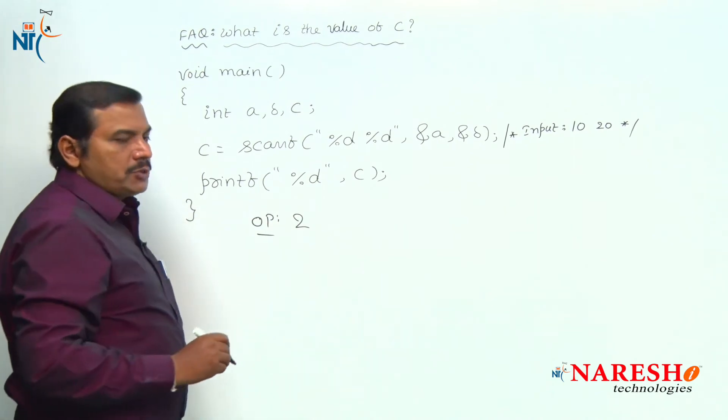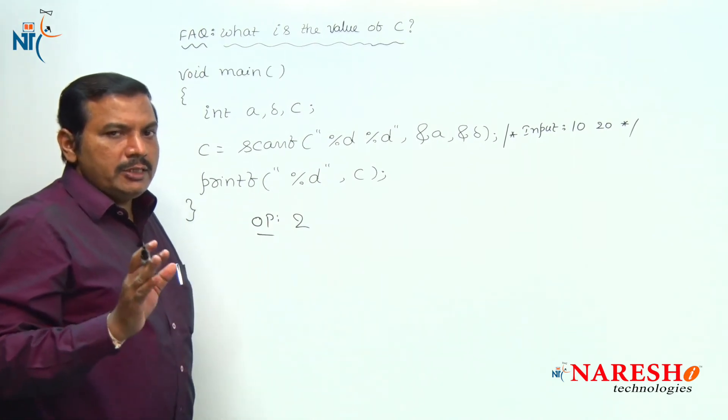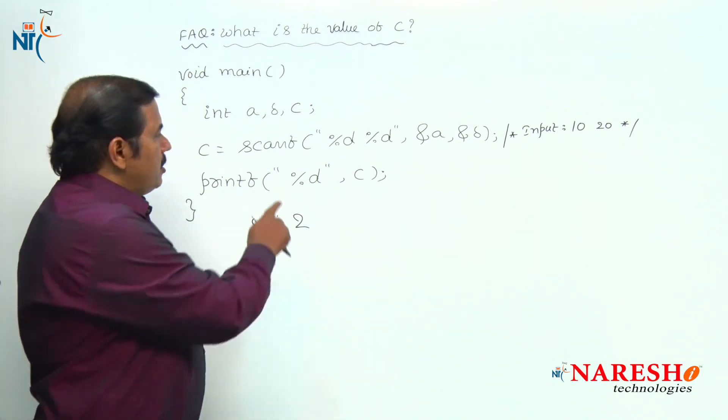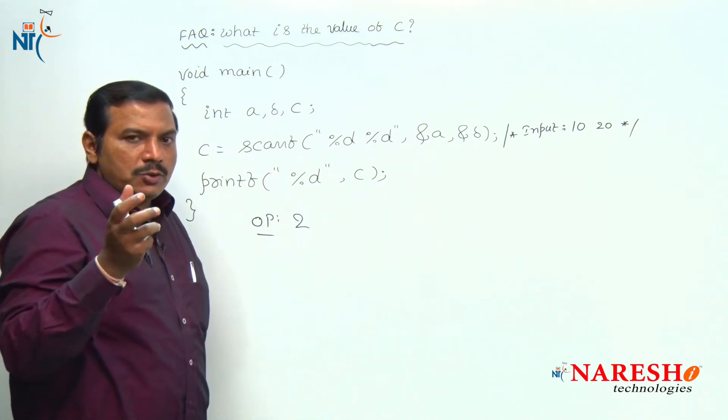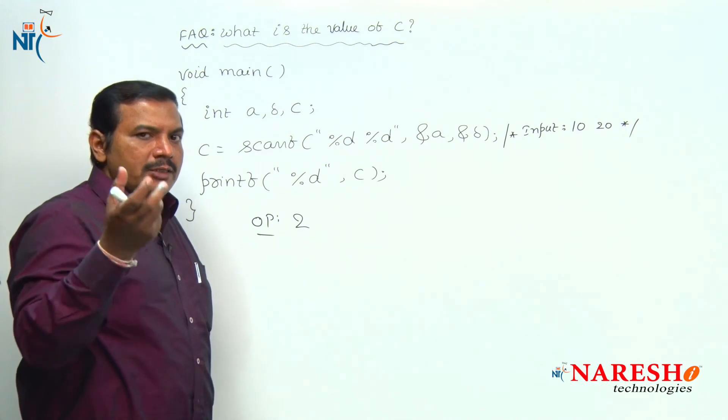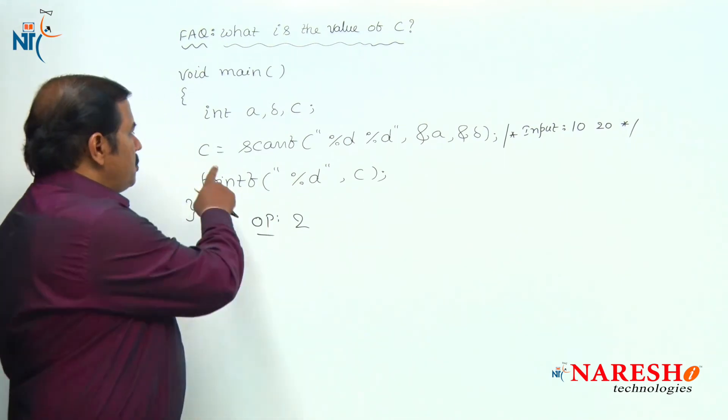Hence, the output of this code is 2. The conclusion is that the input library function scanf returns the total number of input values accepted from the user into the variable c.